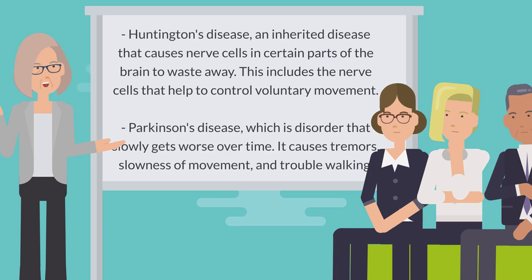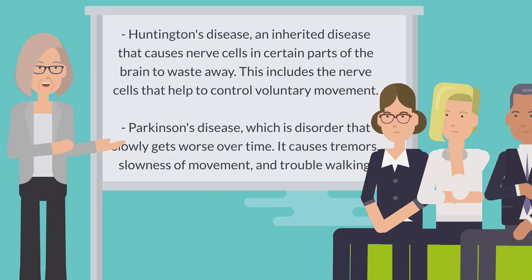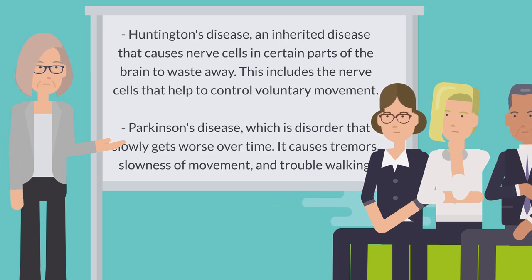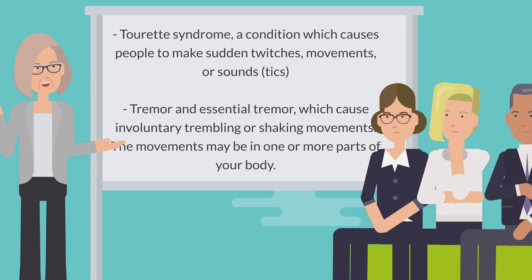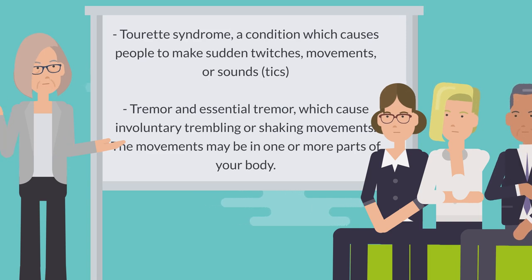Huntington's includes the nerve cells that help to control voluntary movement. Parkinson's disease, a disorder that slowly gets worse over time, causing tremors, slowness of movement, and trouble walking. Tourette syndrome, a condition which causes people to make sudden twitches, movements, or sounds called tics. Tremor and essential tremor, which cause involuntary trembling or shaking movements.